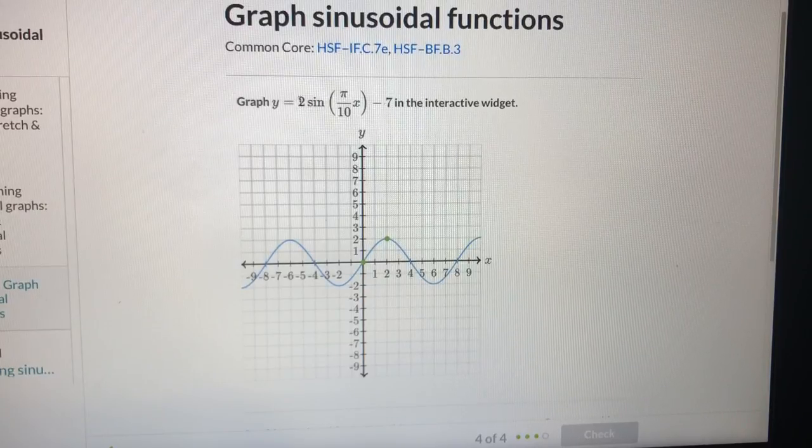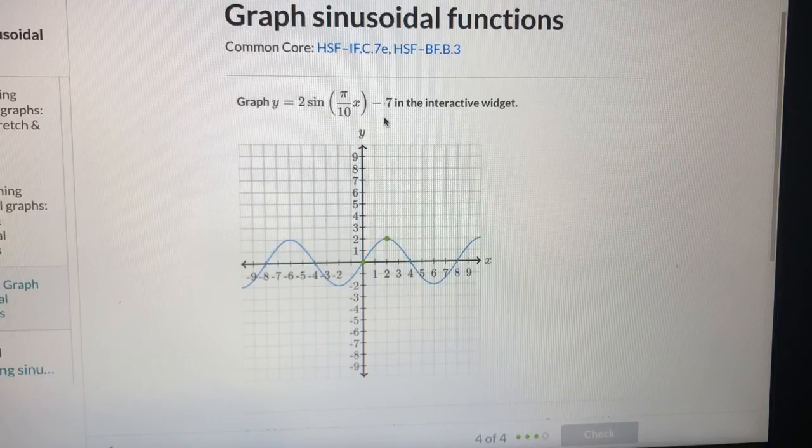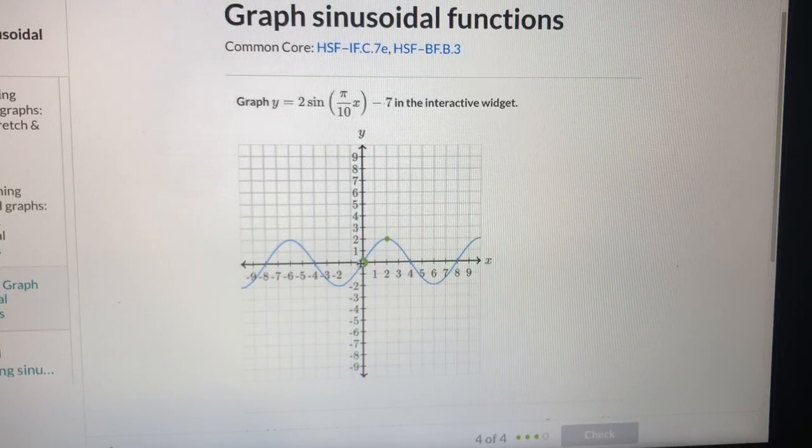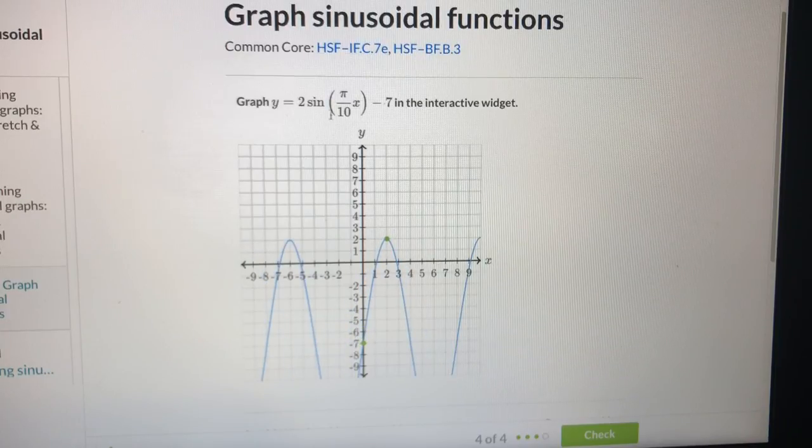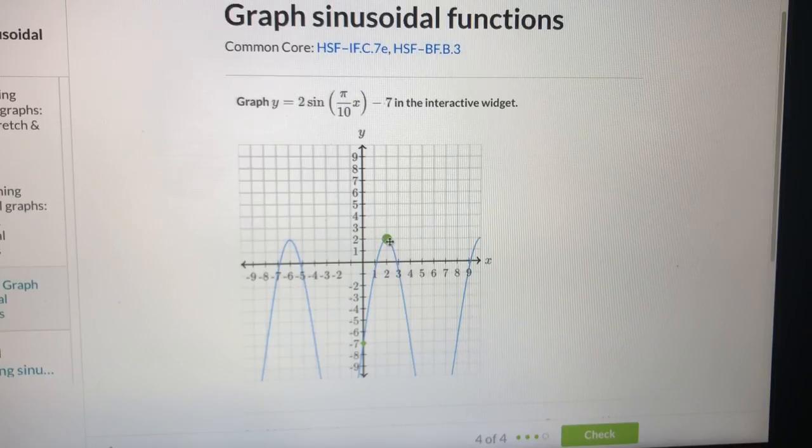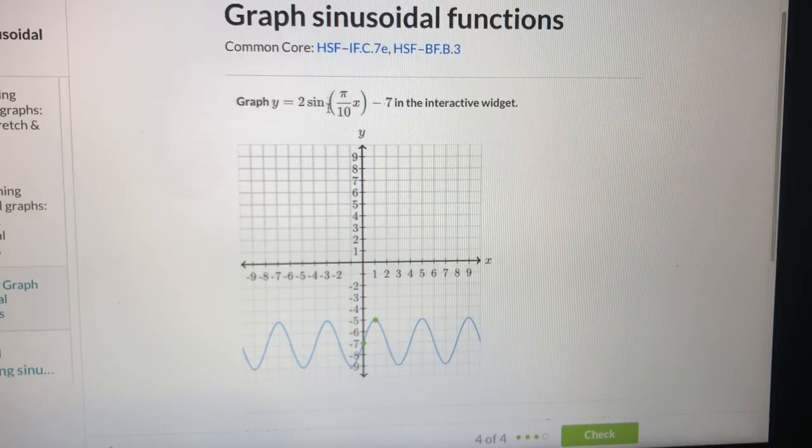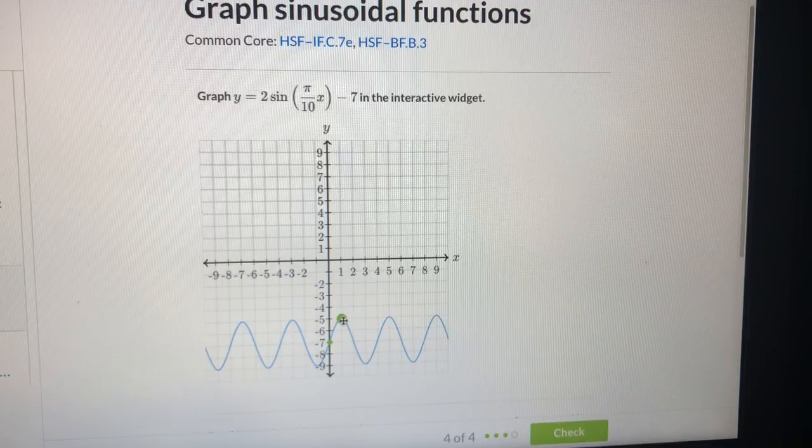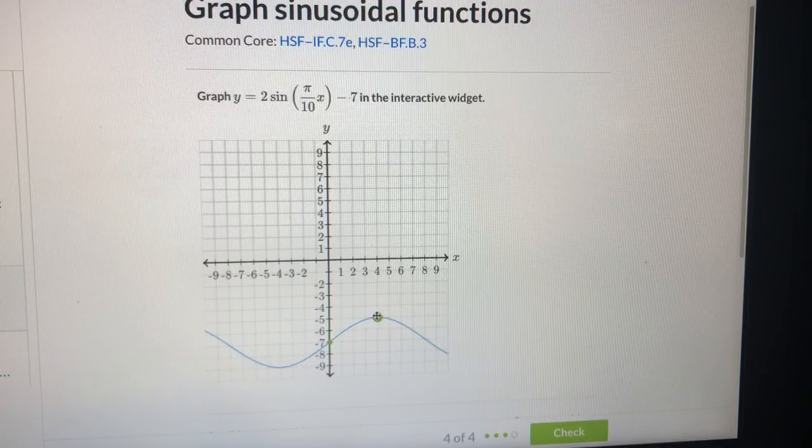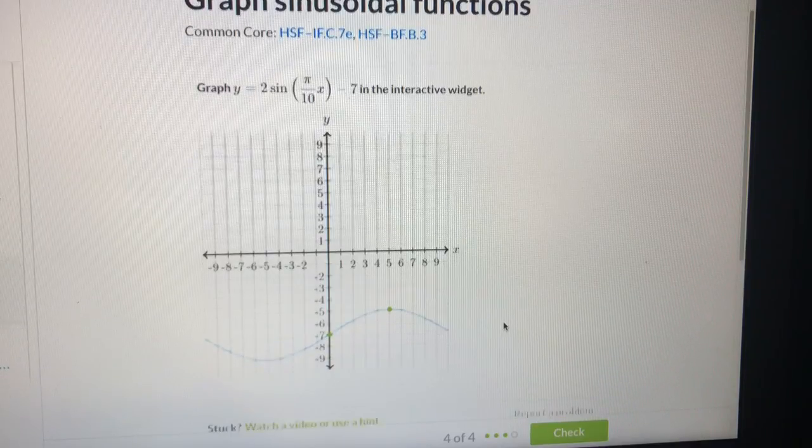Y equal to 2 sine pi over 10x minus 7. So the midline is negative 7 here. And the coefficient is 2. So amplitude is 2. And the period is 20. So I move here to 5. So this is the function.